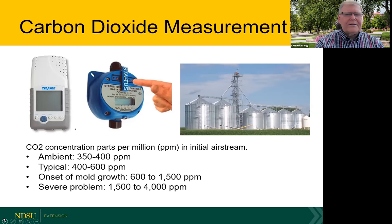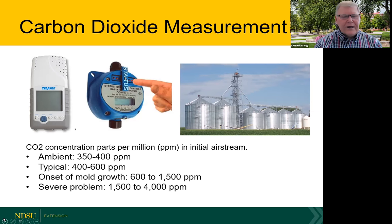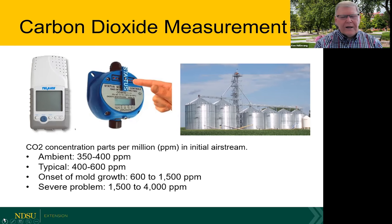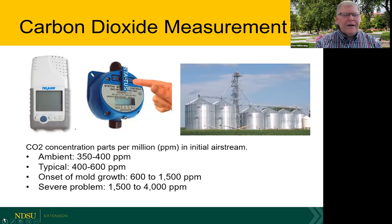A new tool that is starting to show up is carbon dioxide measurement. If we have insect activity or grain spoilage, it will produce carbon dioxide. Typically, normal CO2 levels in stored grain are in the 400–600 parts per million range. If we start getting up to 1,000–1,500 ppm, there's likely spoilage taking place. There is still some debate as to how best to use these units to accurately measure in a grain bin, but it is something available that you may want to consider.